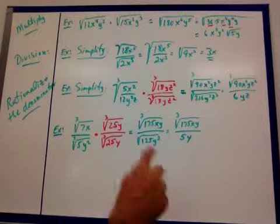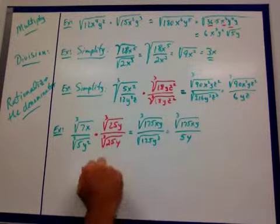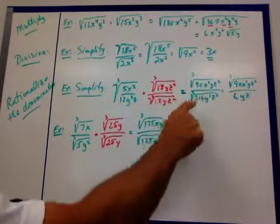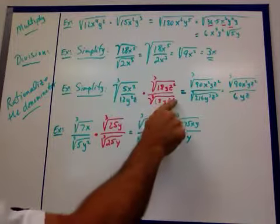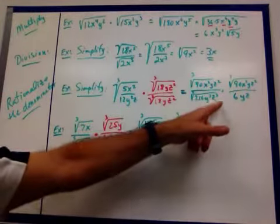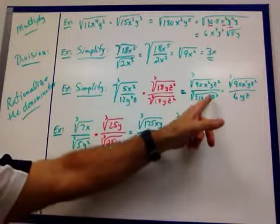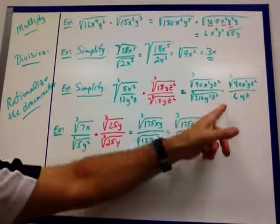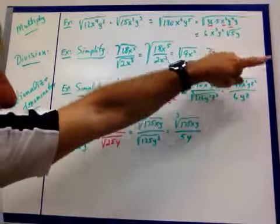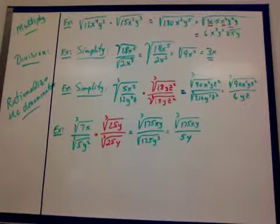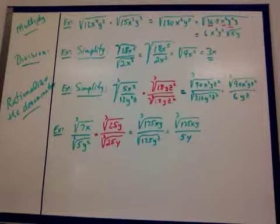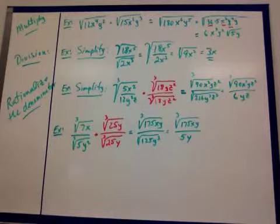I can't combine those at all. Twelve times eighteen is two sixteen. Y squared, y is y to the cube. Z times z squared is z cubed. Now these are all perfect cubes. The cube root of two sixteen is six. The cube, three goes into three once, so I get y. Three goes into three once, so I get a z. Nothing I can do up top as far as cubes, so that's my final answer. That's simplified. I've taken the radical out of the denominator by rationalizing it.